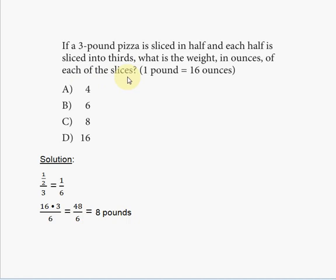It gives you one pound is equal to 16 ounces. What I would do is divide the entire pizza in half. First, I would divide it in half, which is what you see here: one half. And then this half is going to be divided into thirds, so we're going to divide it by three.